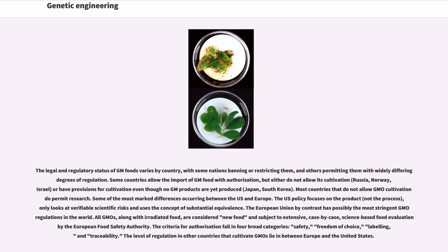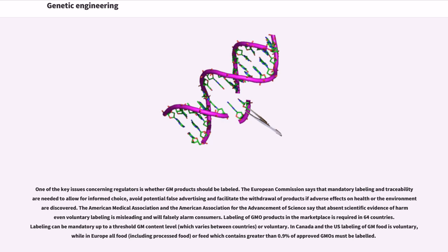The level of regulation in other countries that cultivate GMOs lies between Europe and the United States. One of the key issues concerning regulators is whether GM products should be labeled. The European Commission says that mandatory labeling and traceability are needed to allow for informed choice, avoid potential false advertising, and facilitate the withdrawal of products if adverse effects on health or the environment are discovered. The American Medical Association and the American Association for the Advancement of Science say that absent scientific evidence of harm, even voluntary labeling is misleading and will falsely alarm consumers. Labeling of GMO products in the marketplace is required in 64 countries. In Canada and the US, labeling of GM food is voluntary, while in Europe all food, including processed food or feed which contains greater than 0.9% of approved GMOs, must be labeled.